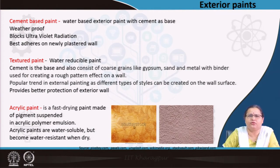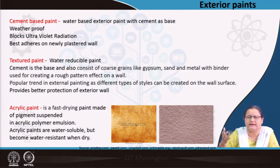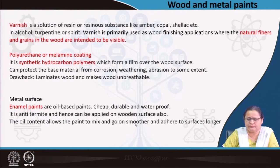Acrylic paint is a fast-drying paint made of pigments suspended in acrylic polymer emulsion. Acrylic paints are water-soluble but become water-resistant when dry, making them washable — meaning nature can wash them with rain without water entering the building.